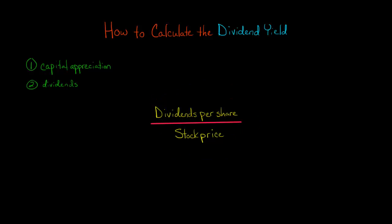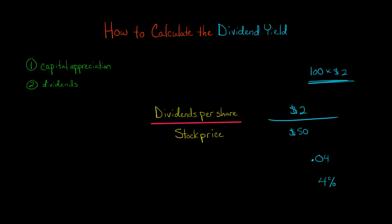Let's say we had a company that paid out $2 of dividends per share. So if you owned 100 shares of the company's stock, you would get $200 of dividends. We have $2 in dividends per share and the company's stock price is $50. So if you take 2 divided by 50, you get 0.04, or 4%. And so 4% would be this company's dividend yield.